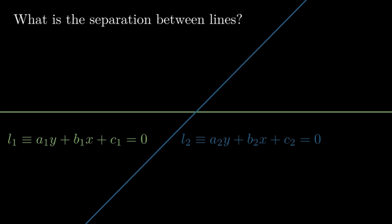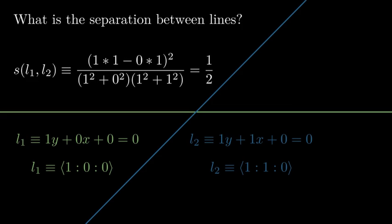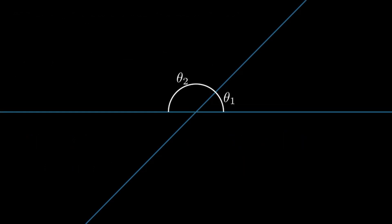Because lines written in standard form are so important to rational trigonometry, a concise notation is used where the line is defined as the ratio between its constants. The spread is defined as this value. Defining separation in this way solves another ambiguity of traditional trigonometry: while there are two potential angles between lines in traditional trigonometry, there is only one spread, as it is defined in relationship to the equations of the intersecting lines.